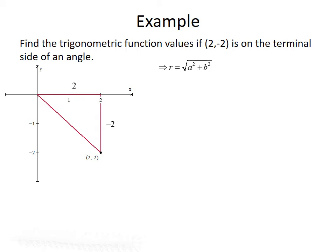To find the hypotenuse, we can use the Pythagorean theorem. r equals the square root of a squared plus b squared. Plugging in our values, r equals the square root of 2 squared plus (-2) squared. Both 2 squared and (-2) squared are 4, so we have the square root of 4 plus 4, which is the square root of 8. We can factor 8 as 4 times 2 and simplify to get 2 times the square root of 2.